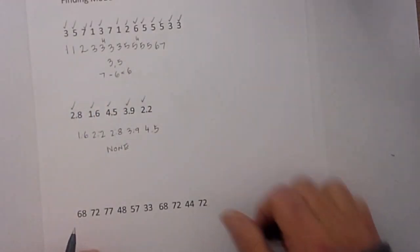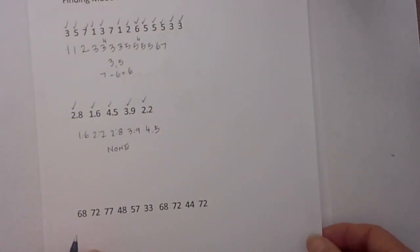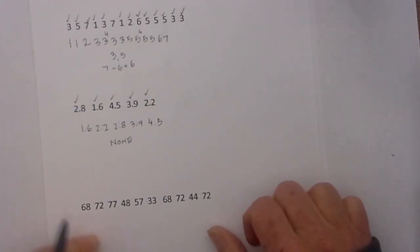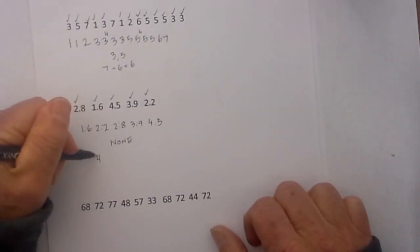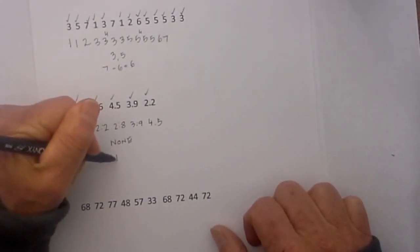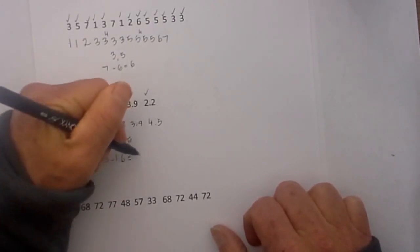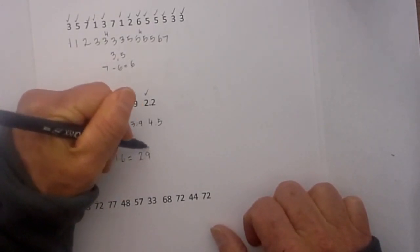There is not a number that occurs more than once. Now in order to get the range we take 4.5 minus 1.6 and that equals 2.9.